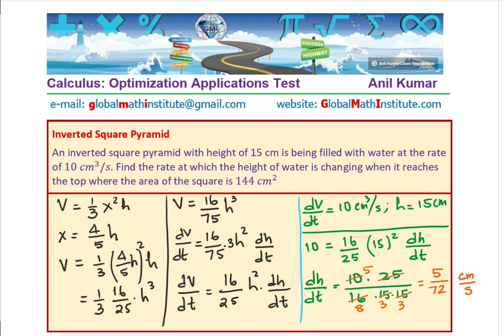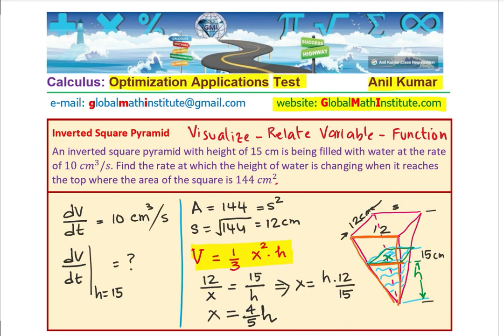So dH/dt when the height is at the top — 15 cm — is 5/72 centimeters per second. That is how we answer this question. I hope the steps are absolutely clear. Let's look back at the strategy adopted.